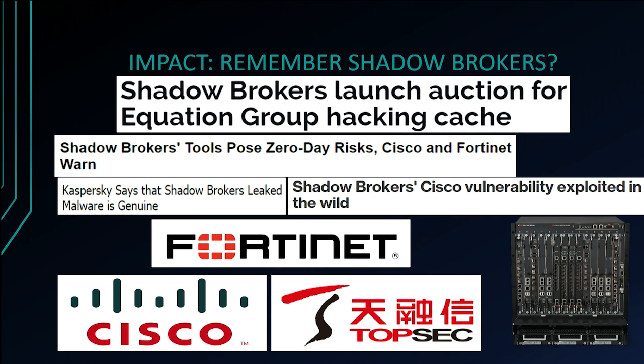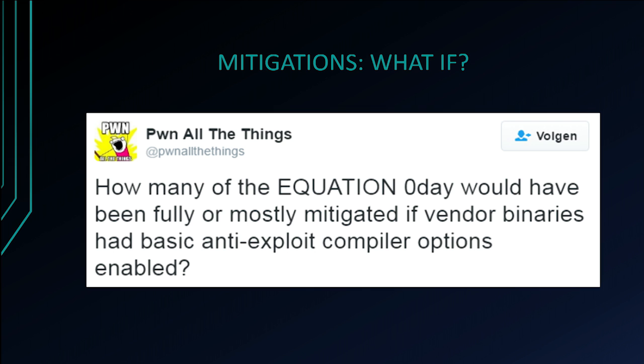What's the impact of memory corruption vulnerabilities in embedded systems? I'd like to draw your attention to the Shadow Brokers incident. An unknown hacker group managed to obtain exploit code and implant code used by the Equation APT group, a very high-level threat actor, and released it. Among these exploits were exploits for network security equipment such as Fortinet, Cisco, and TopSec firewalls and intrusion detection systems used in highly sensitive environments. What really stood out is that none of the memory corruption vulnerabilities in this exploit set bypassed any known exploit mitigations common in the general purpose world. It raises the question of how many of these zero-days would have been fully or at least partially mitigated if vendors had enabled basic anti-exploit mitigations in their products.